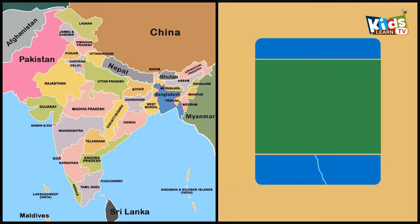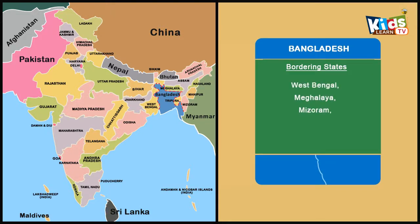The Indian states West Bengal, Meghalaya, Mizoram, Tripura and Assam share the border with Bangladesh. The border length is 4096.7 km.